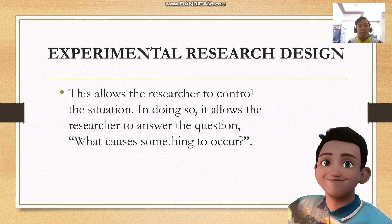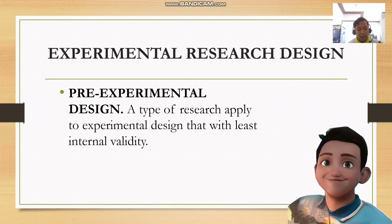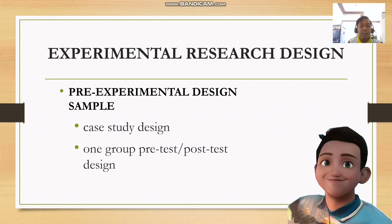An example of experimental research design is the pre-experimental research design. It is a type of research applied to experimental design with the least internal validity. One type is the single-group pre-test, post-test design, which measures the group two times — before and after the intervention. Examples include the case study design and the one-group pre-test, post-test design.